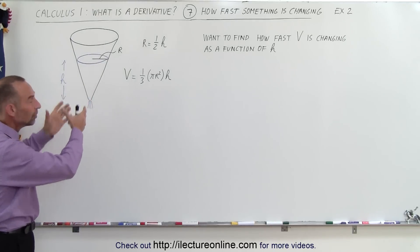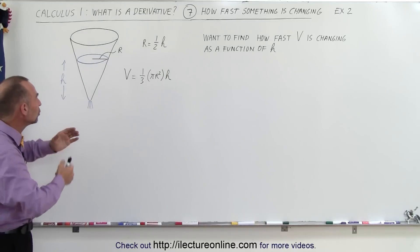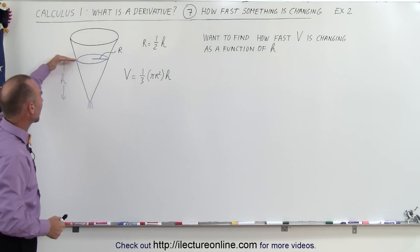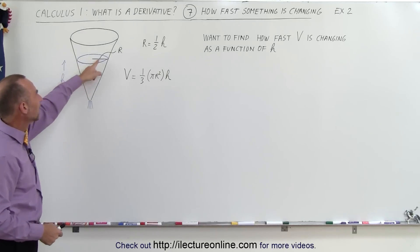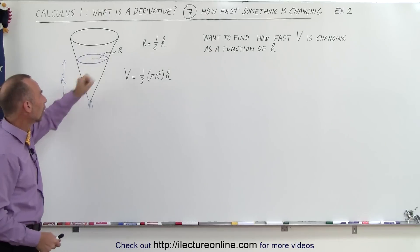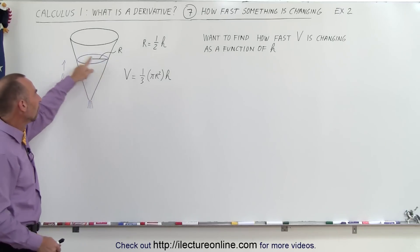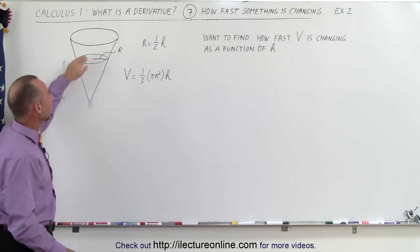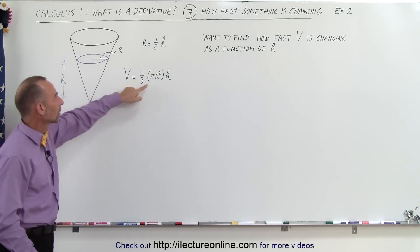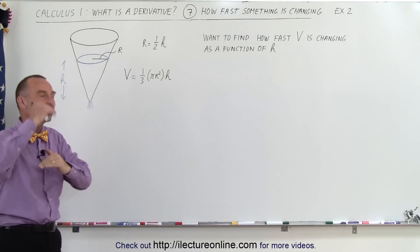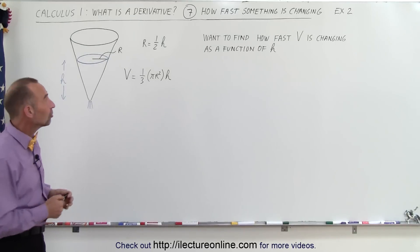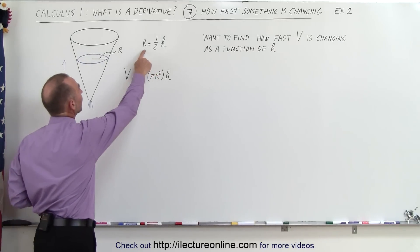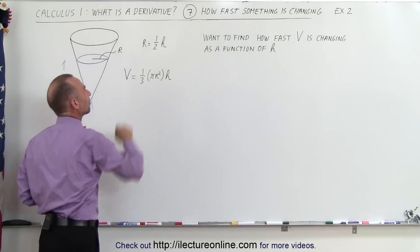Here we have a container, it looks like it's the shape of a cone. It's filled with water up to a certain height h, and the radius at that point is equal to r. The volume of the amount of water that we have would be equal to one-third the area of the base, which would be πr² times the height to which the container is filled. The relationship between the height and the radius is that the radius is one-half the height.